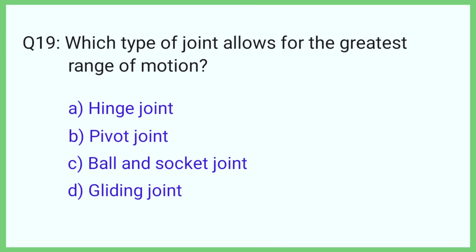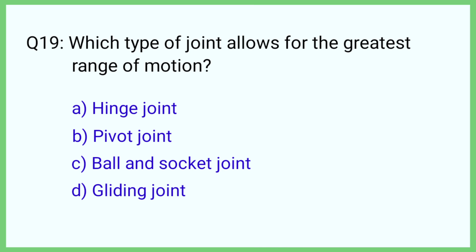Question number 19. Which type of joint allows for the greatest range of motion? The correct answer is option C: Ball and socket joint.